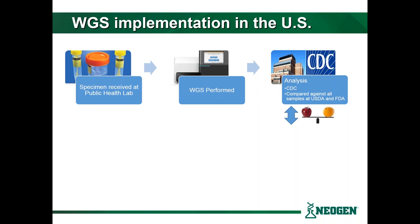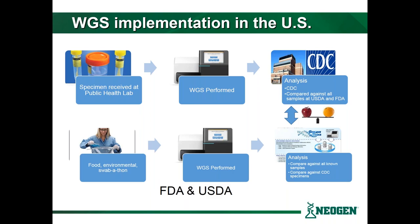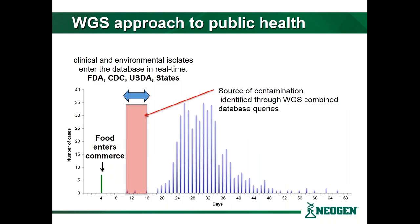There are three agencies in play: the CDC, the FDA, and the USDA. Specimens and isolates are generated in public health labs — if somebody gets sick, those are sent to the lab, whole genome sequencing is performed, and that goes through the CDC and the GenomeTracker. At the same time, the FDA and USDA continually look throughout the supply chain with food, environmental, and swab-a-thon samples, generating isolates and feeding that back into the same GenomeTracker. What they're trying to do is match up organisms from sick individuals to somewhere in the supply chain.